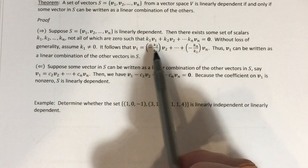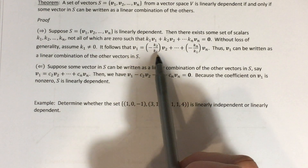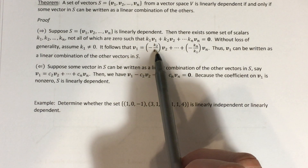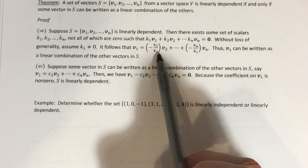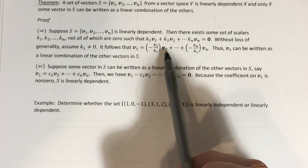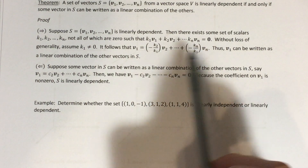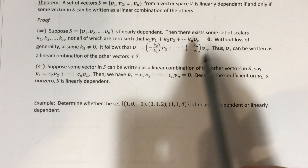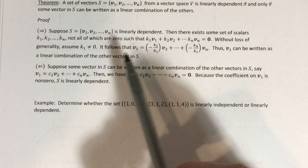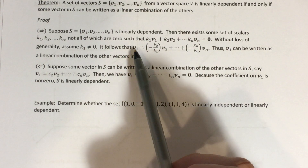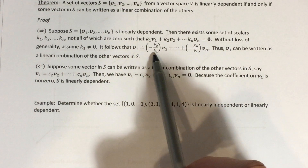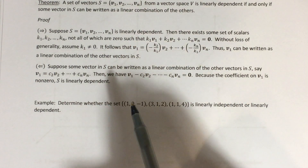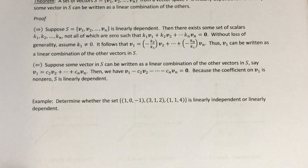If k1 is not equal to zero, I can isolate v1 in this linear combination that's equal to zero by subtracting each of the other terms to the left-hand side. Since k1 is non-zero, I can divide by it — anything non-zero can be used as a divisor. Dividing both sides by k1 (the same as multiplying by 1/k1), the right-hand side becomes a linear combination of v2 through vn equal to v1. That's exactly what we were trying to prove: one vector in our set S can be written as a linear combination of the other vectors in S.